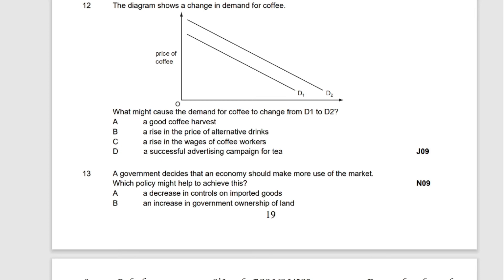Question number 12: the diagram shows a change in demand for coffee — the demand curve shifts from D1 to D2, meaning demand is increasing. Increase in demand is caused by non-price factors. Option A — a good coffee harvest — is relevant to production; when production increases, supply rises, not demand, so we omit Option A. Option B — a rise in the price of alternative drinks — we will return to this.